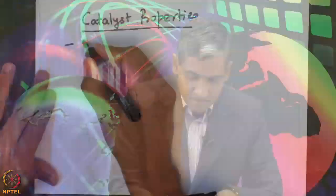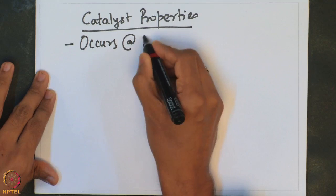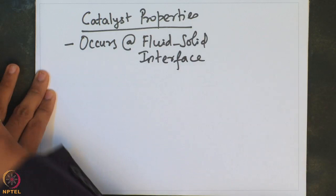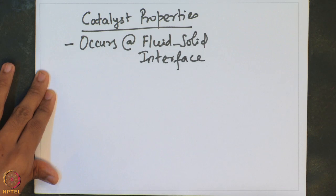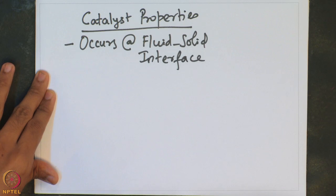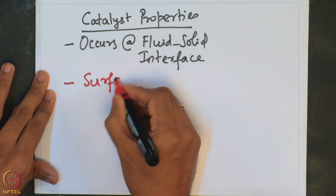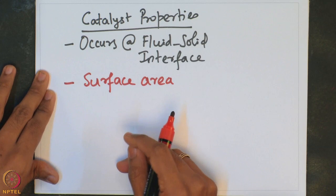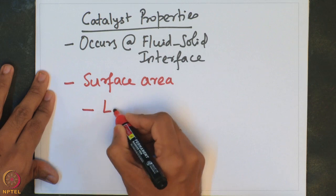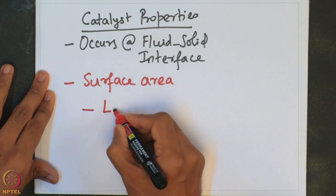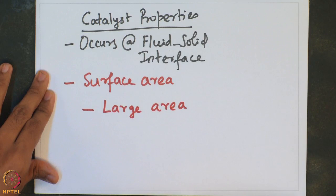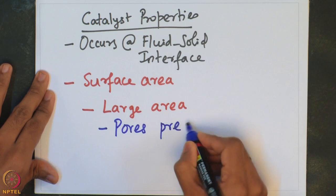Catalytic reaction typically occurs at the fluid-solid interface. Therefore, clearly the reaction would be a function of the surface area available for the reaction — the interfacial area available for the reaction to occur. Catalyst particles actually facilitate availability of large area for the reaction to happen.